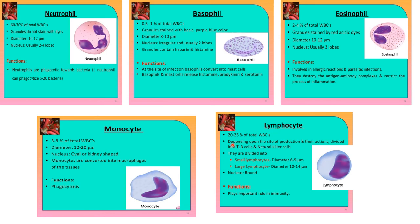Lymphocytes form 20 to 25% of total WBCs. Depending upon the site of production and their action, they are divided into T cells — also known as cell-mediated immunity — B cells — known as humoral immunity — and natural killer cells. They are divided into small lymphocytes with diameter 6 to 9 nanometers and large lymphocytes with diameter 10 to 40 nanometers. The nucleus is round and they play an important role in immunity. Neutrophils form the first line of defense against acute infection, and once neutrophils fail, monocytes come into the picture and perform phagocytosis.